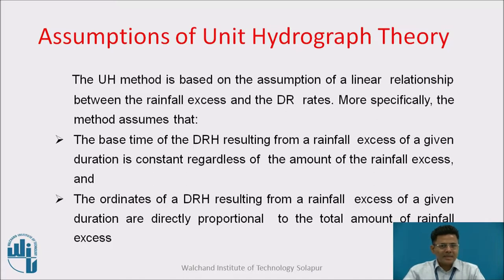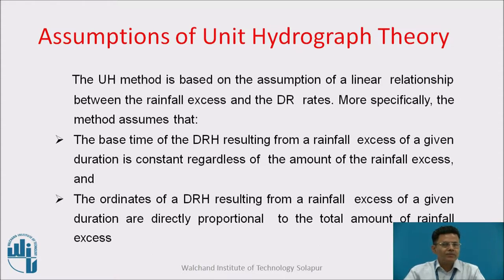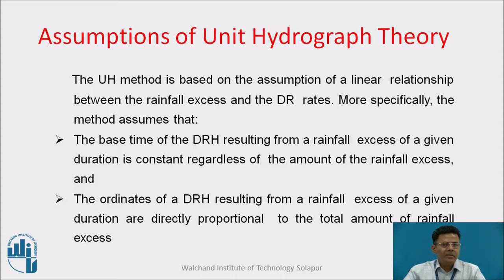Before going to this, let us discuss the assumptions of Unit Hydrograph Theory. The unit hydrograph method is based on the assumption of a linear relationship between the rainfall excess and the direct runoff rates. More specifically, the method assumes: number 1, the base time of the direct runoff hydrograph resulting from a rainfall excess of a given duration is constant regardless of the amount of rainfall excess. And second, the ordinates of the direct runoff hydrograph resulting from a rainfall excess of a given duration are directly proportional to the total amount of rainfall excess.